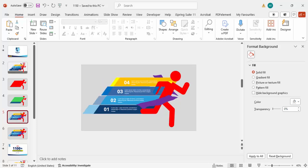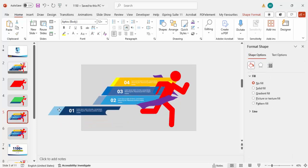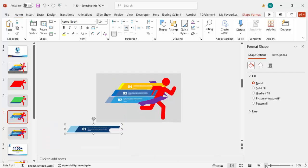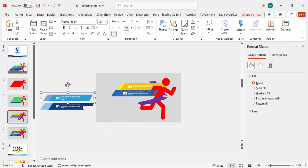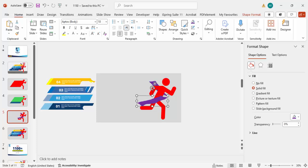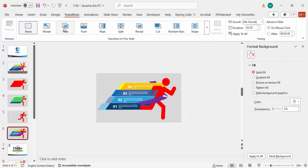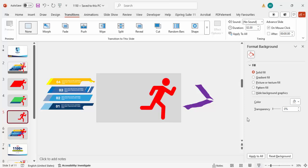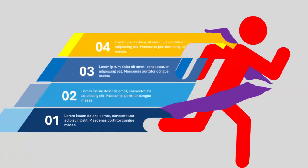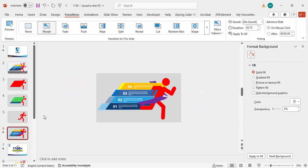On the duplicated slide, move the grouped elements smaller and outside the slide area so they are not visible. Move each group above or off the slide boundary. Then select the second slide, go to Transitions, select Morph, and set the duration to around 0.75 seconds. When you play it, you get a smooth morph animation effect — adjust as needed for your requirements.